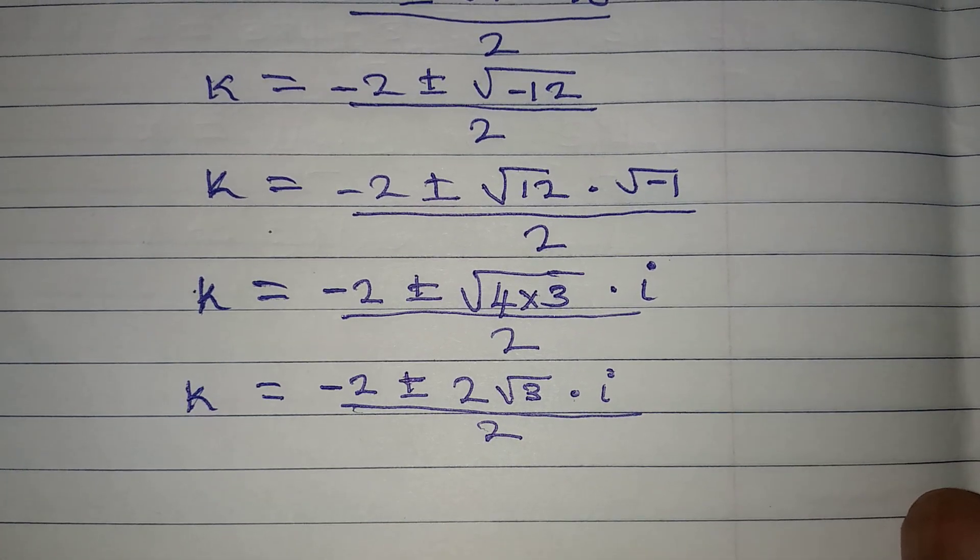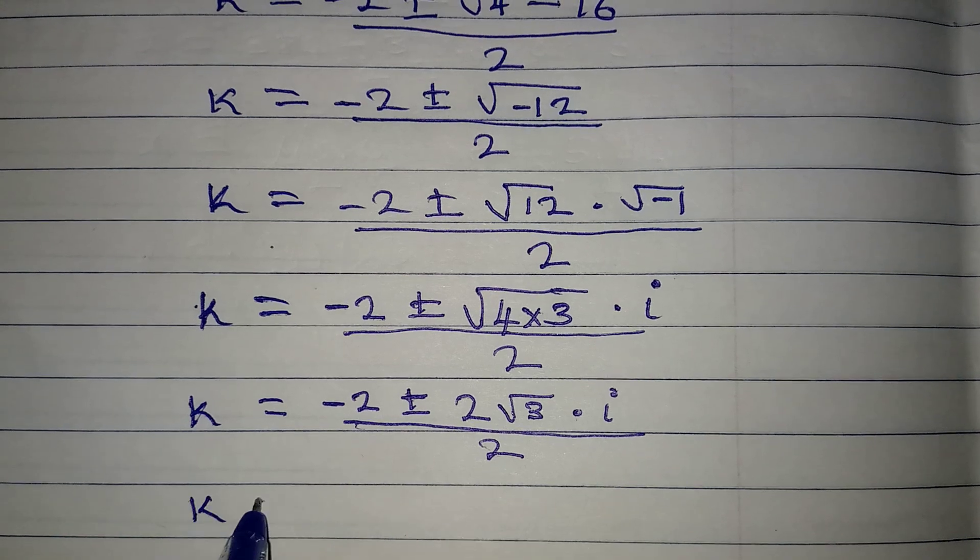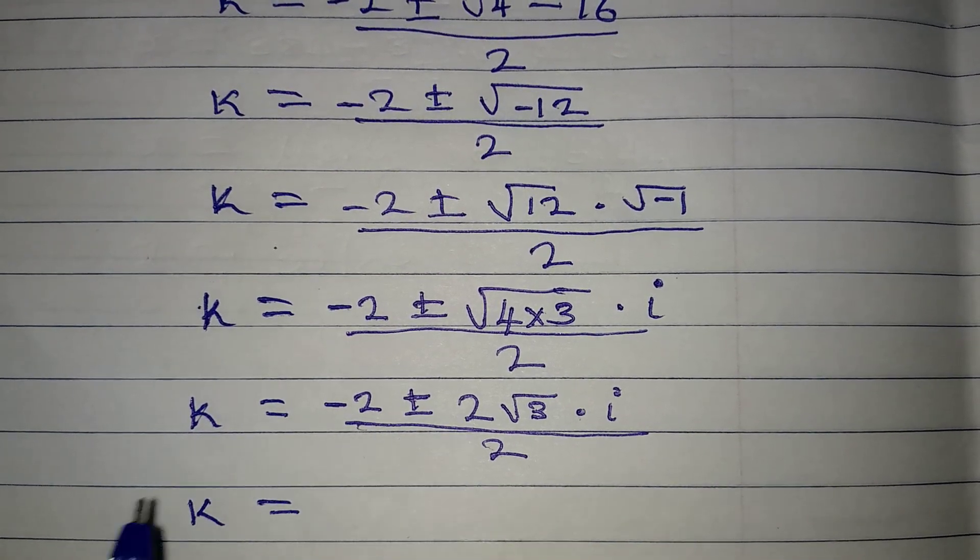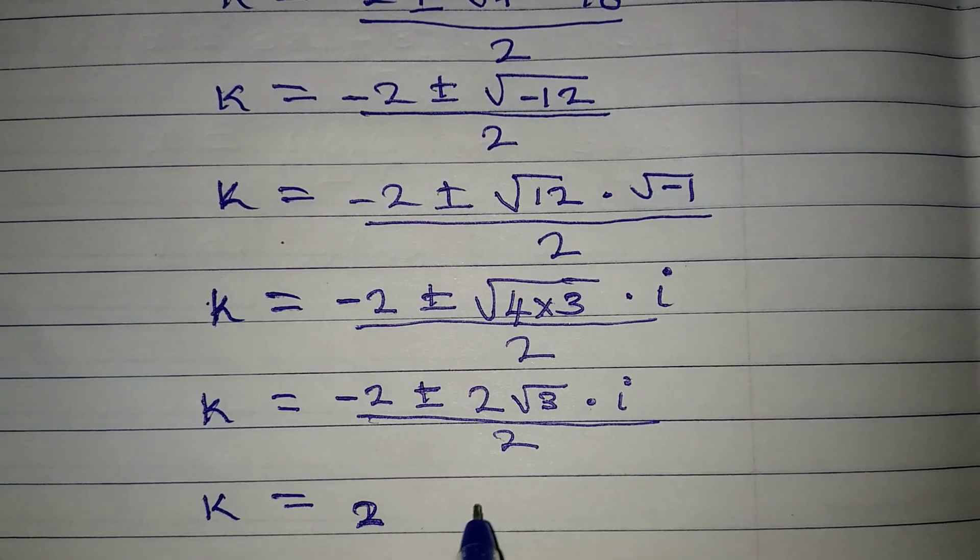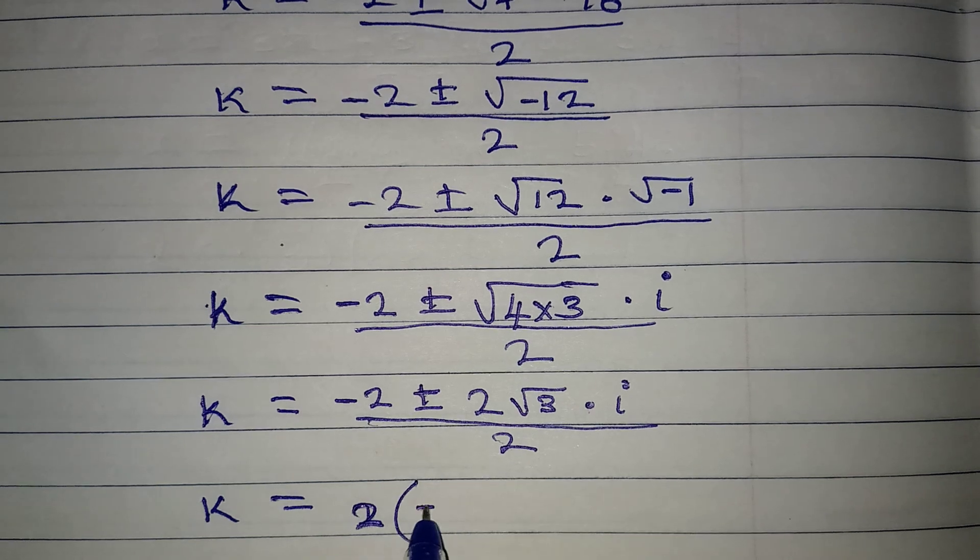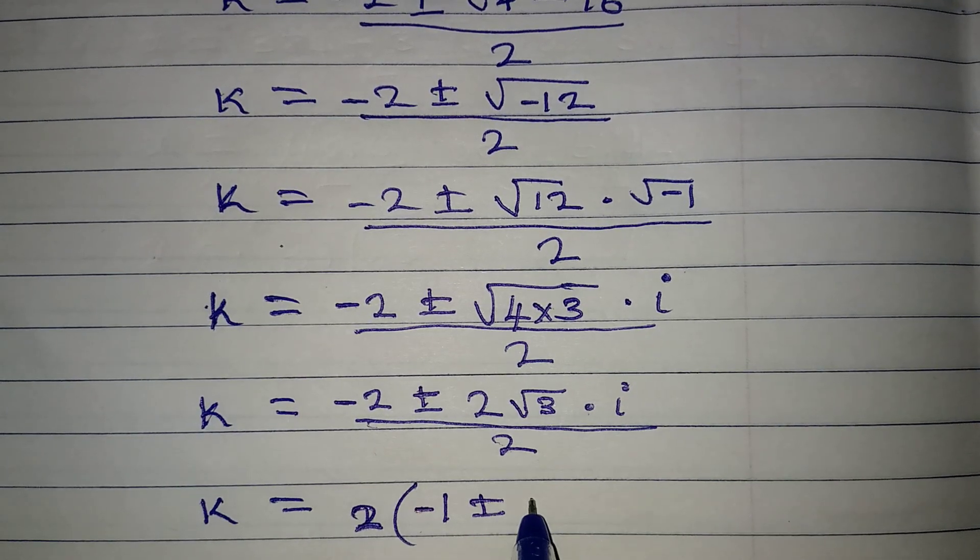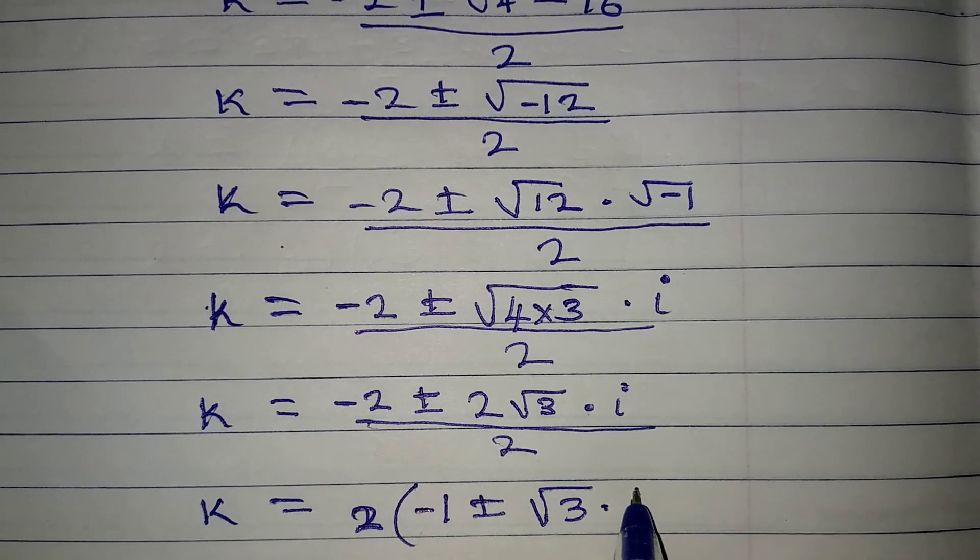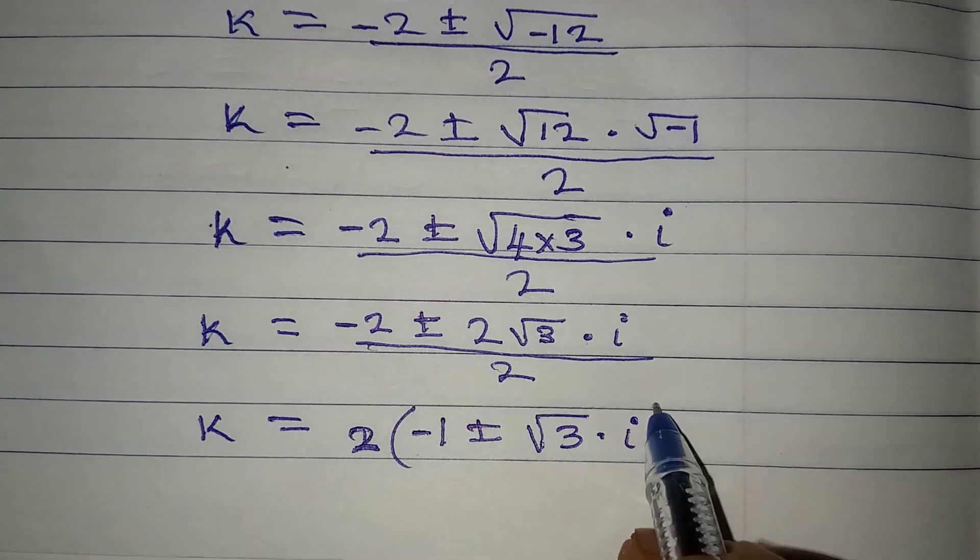Now, look at what I want to do from here. Our k now will be equal to. Do you know that we can factor 2 out? And if we do, we have 2 outside. Then here we have -1 ± here we have just root 3 multiplied by i. That's what we have. Let's close this. And the whole of this will be over 2.